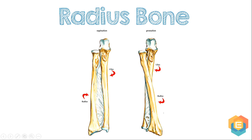In this video, we are going to learn about the radius bone. The radius bone is also known as the radial bone. It is a long bone of the forearm and one of the two bones of the forearm, the other being the ulna. The radius is shorter than the ulna and is a prism-shaped long bone.